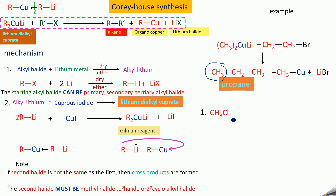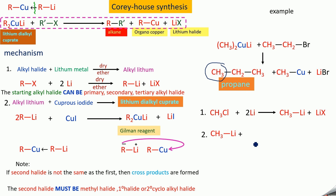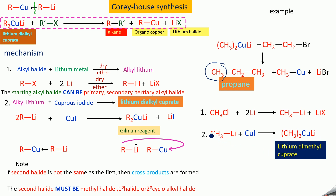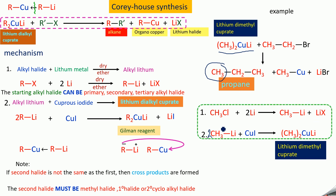First, take CH₃Cl (the starting alkyl halide). CH₃Cl on treatment with lithium in dry ether gives methyl lithium (CH₃Li) and LiCl — this is the first step. In the second step, methyl lithium is treated with cuprous iodide (CuI). Taking two molecules of CH₃Li, you get (CH₃)₂CuLi, which is lithium dimethyl cuprate — this is the Gilman reagent used for preparing propane.